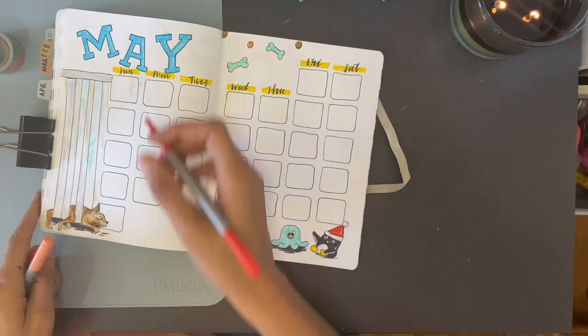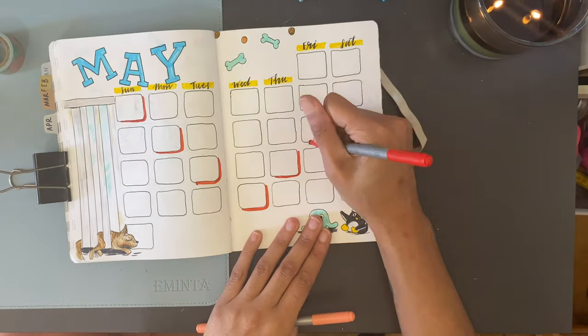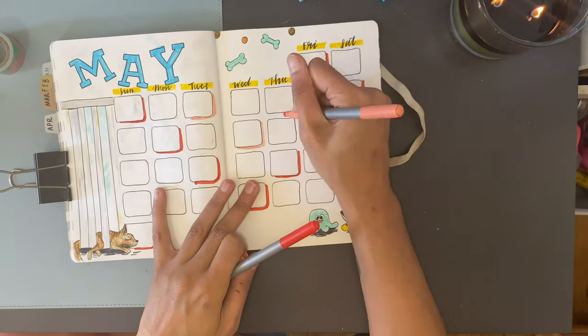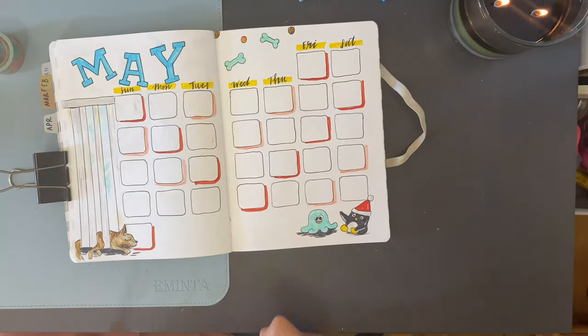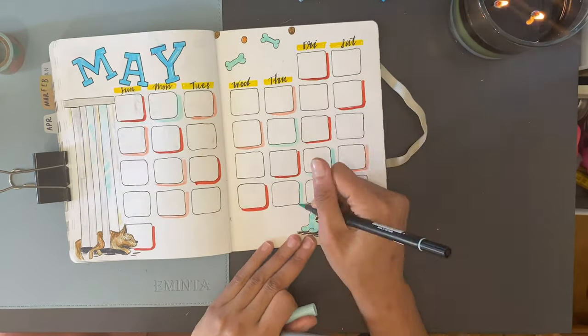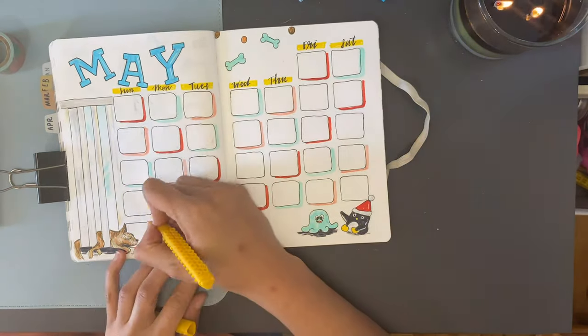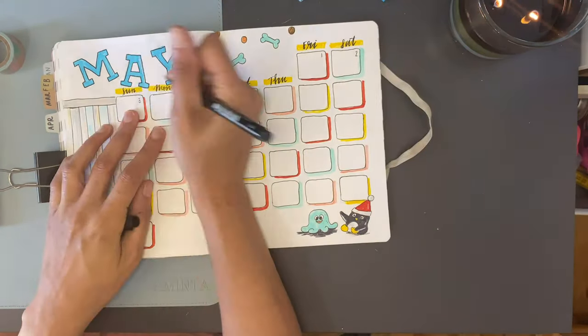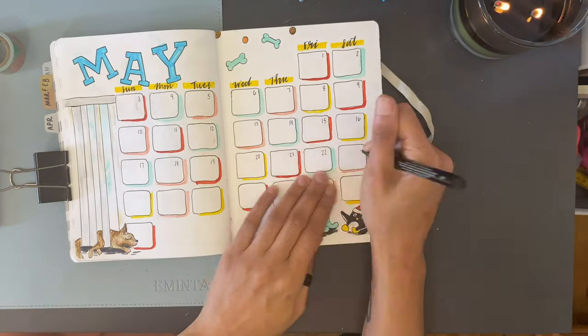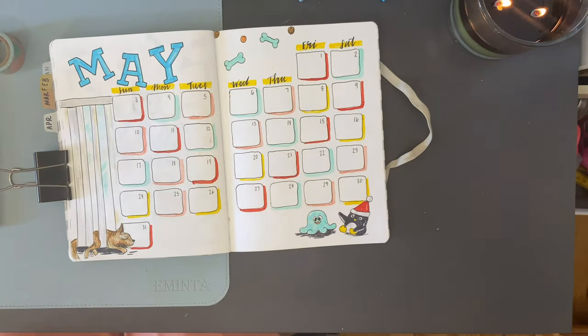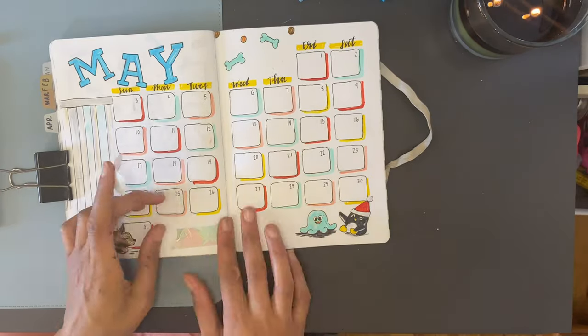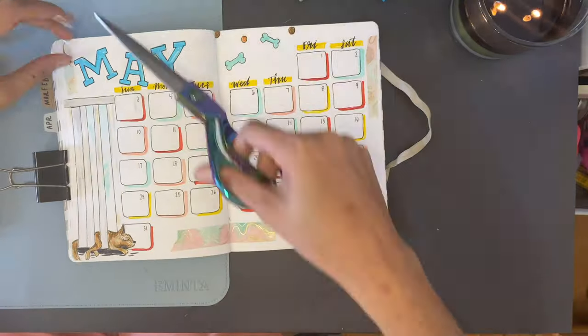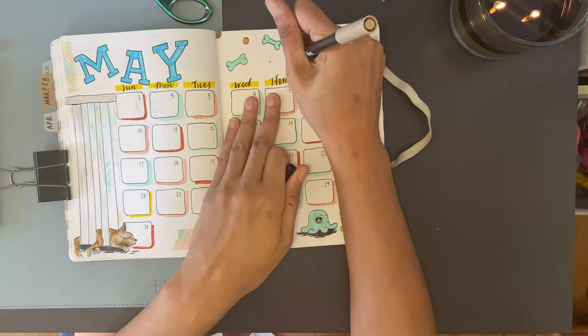I thought it would be fun to give different color drop shadows to each of the boxes in no particular pattern. Just plop down colors right outside of the boxes and really make the whole spread come to life. Then I'm topping it off with some washi tape and some little dog food crumbs for cohesion and then moving right along.